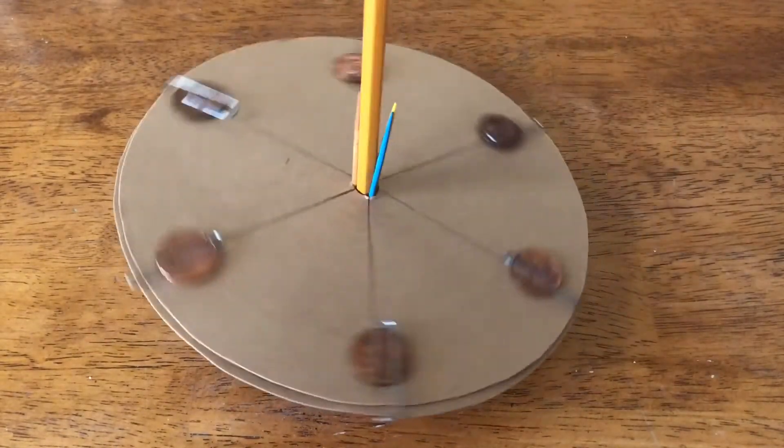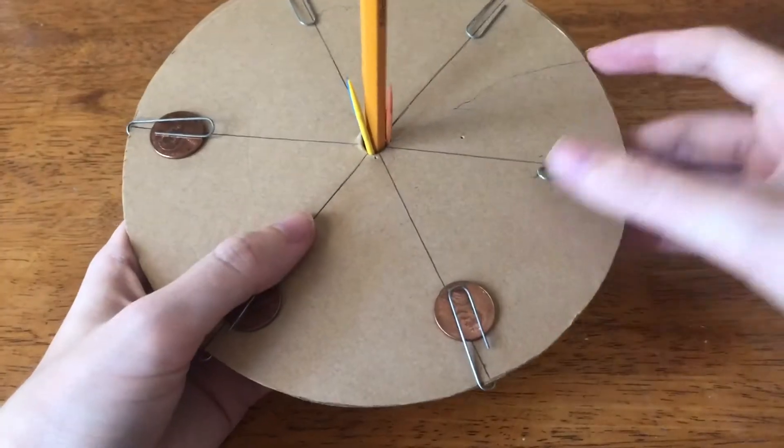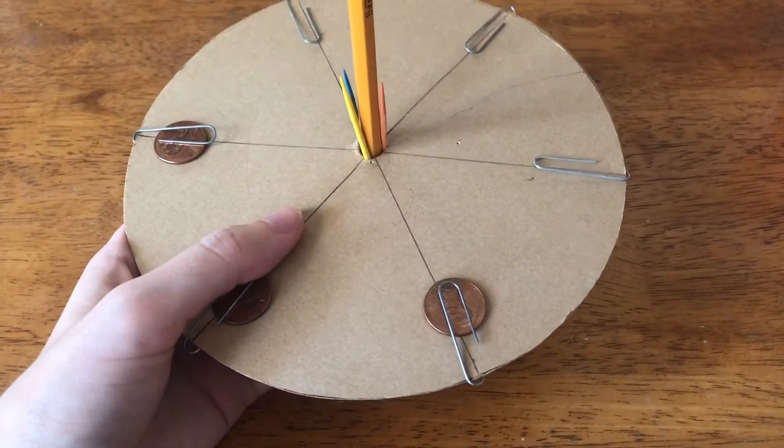They should record results in their student journal and the table and calculate the average times. They should remove a few adjacent pennies and observe how the top spins now.